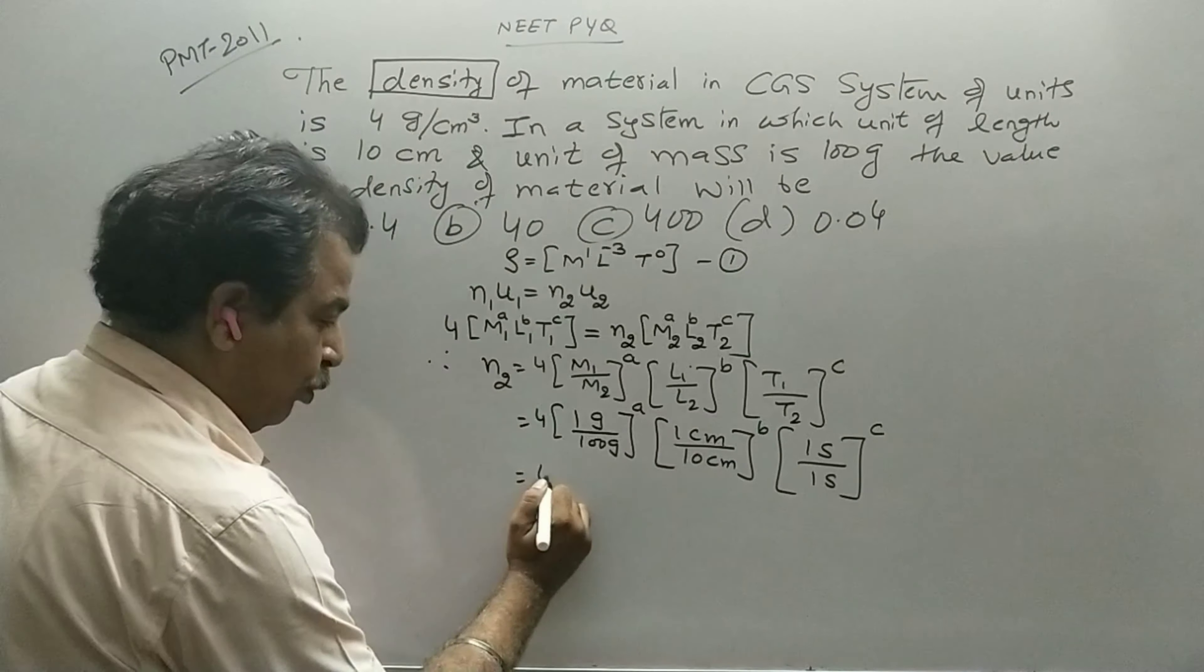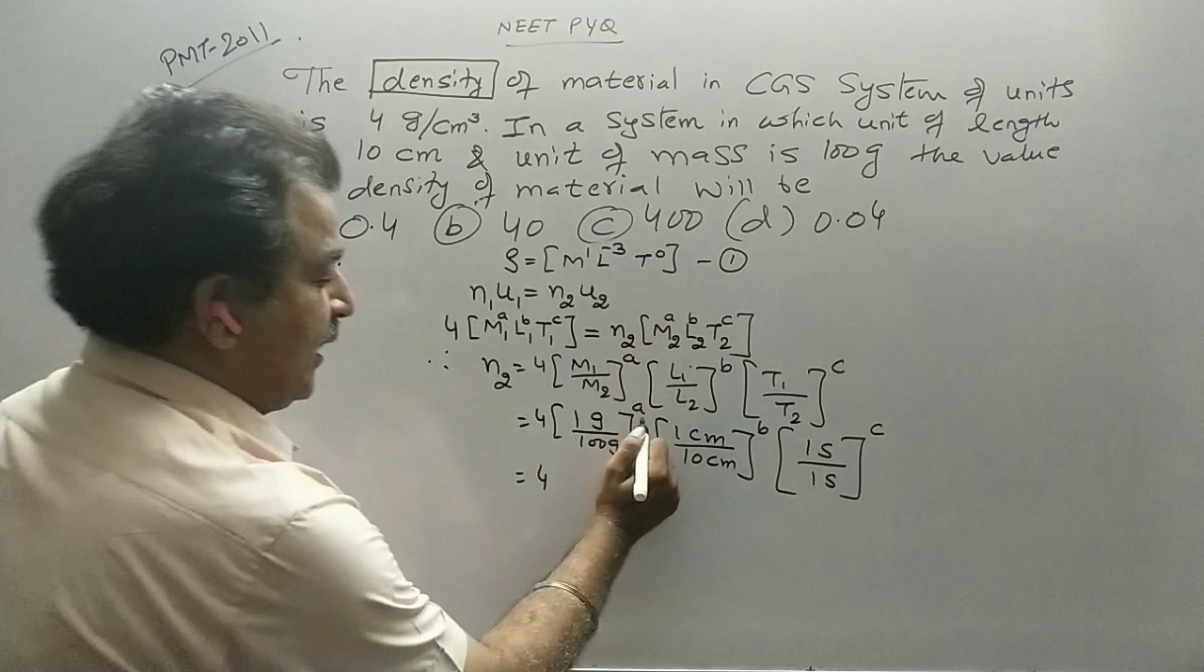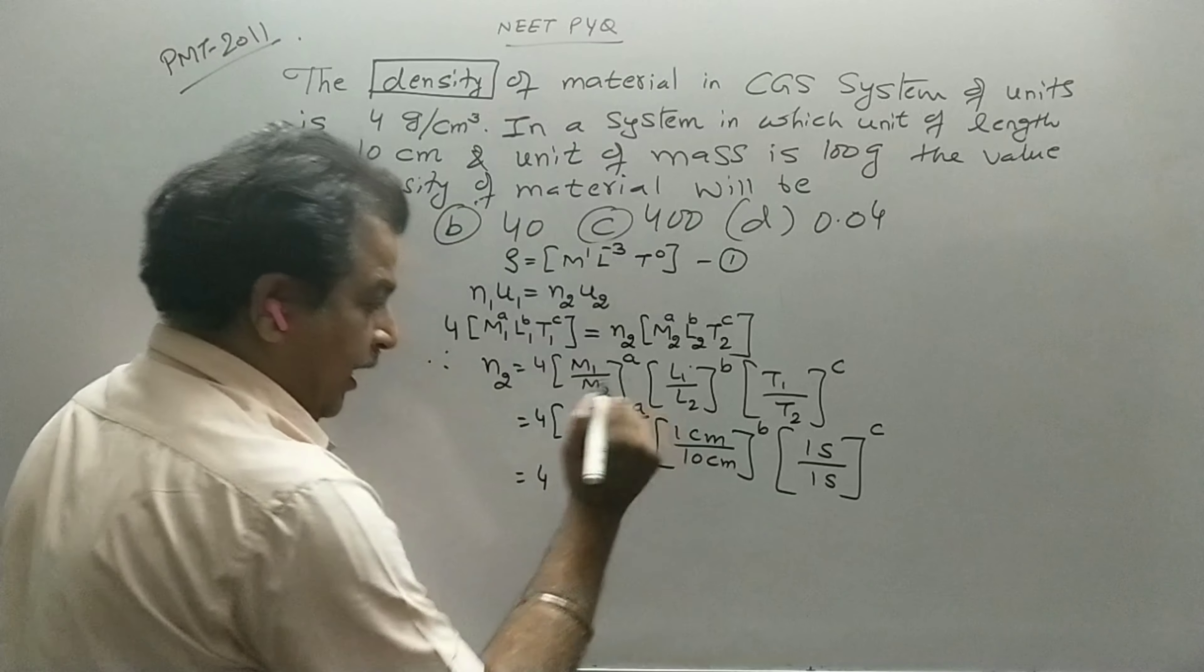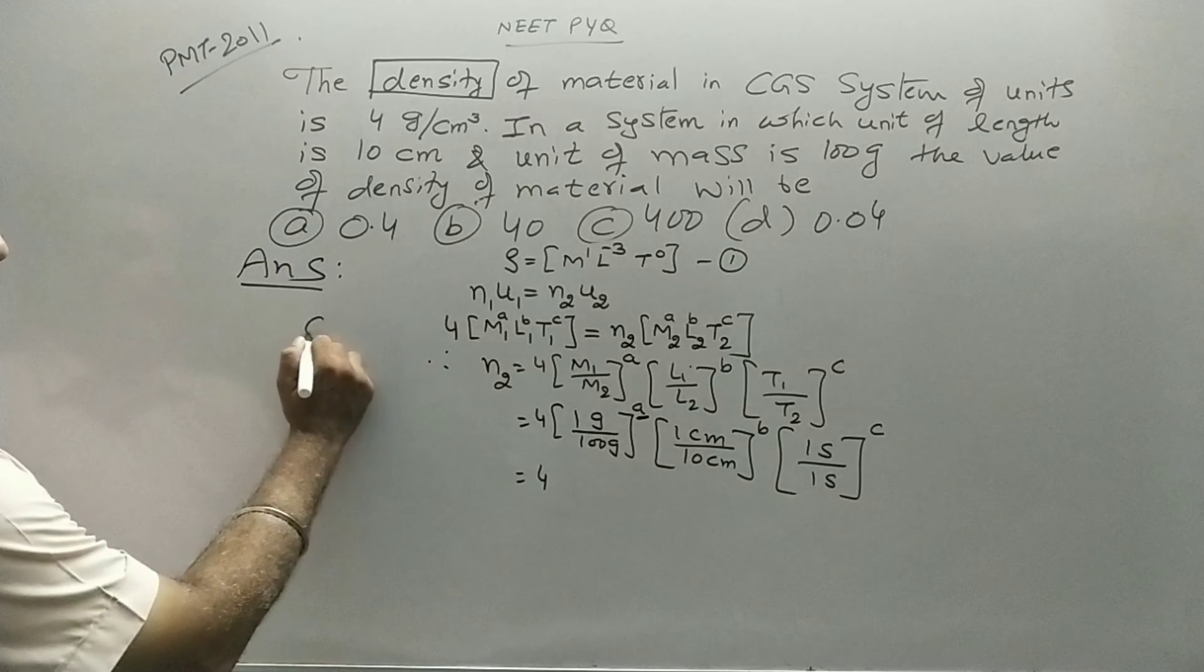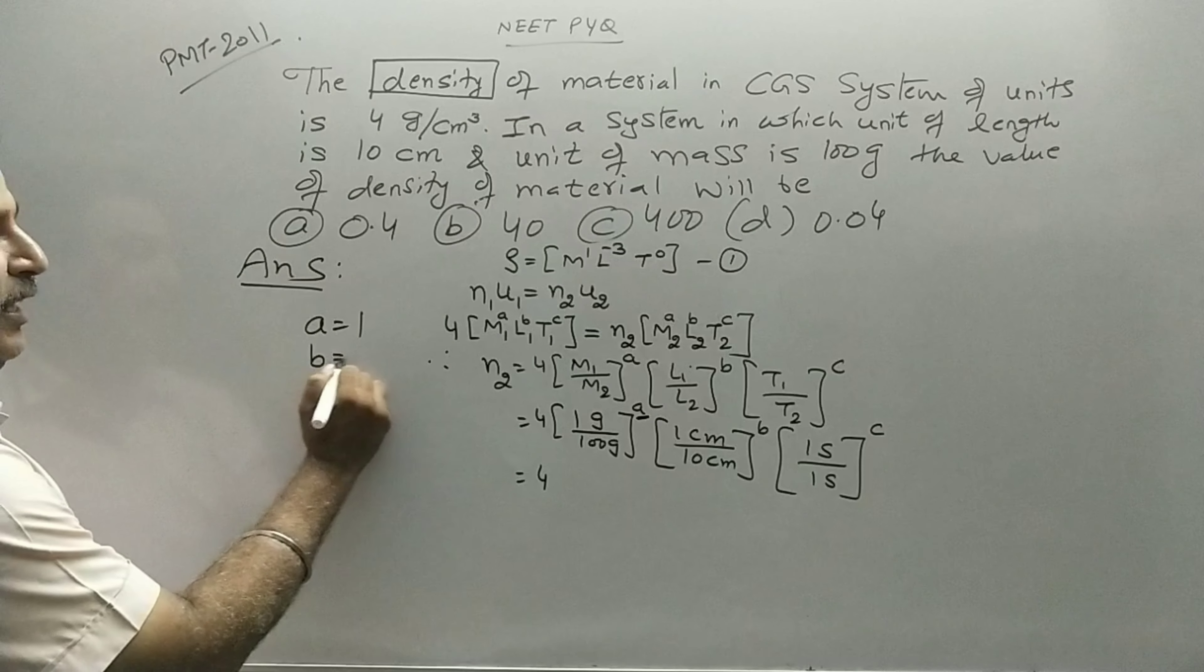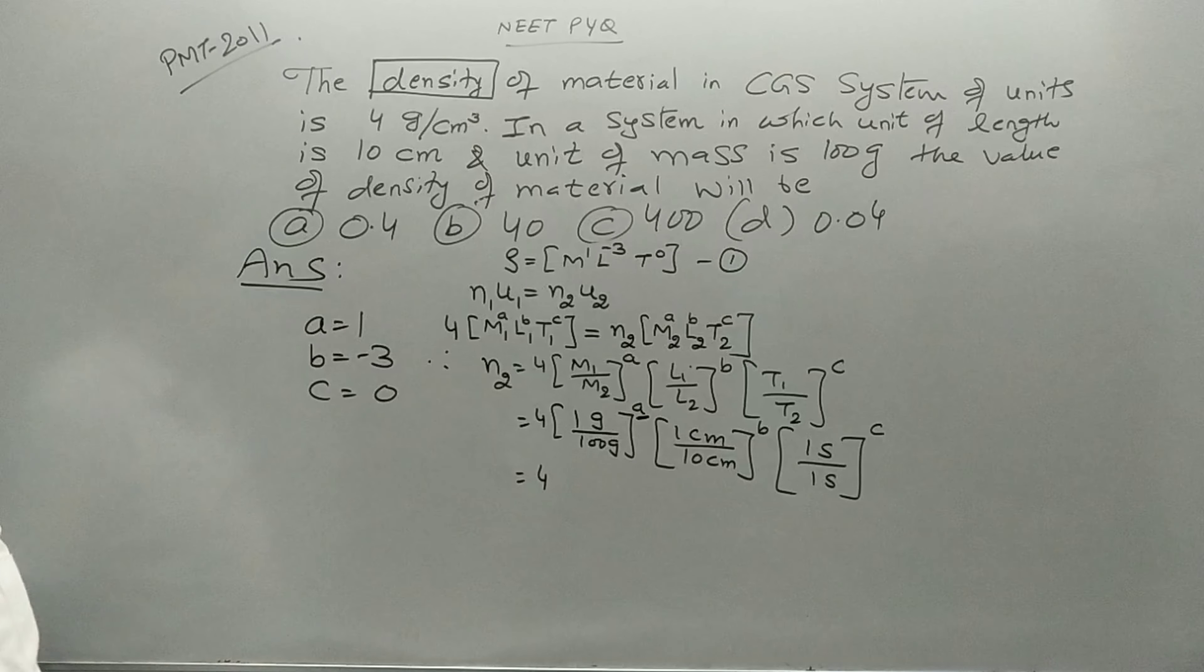That is equal to 4. Now A dimension, so you have to see this. The value of A is 1, value of B is minus 3, value of C is 0.